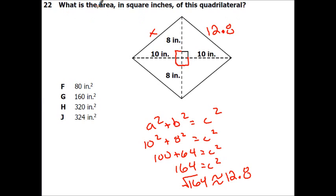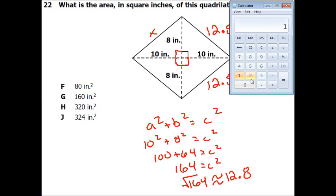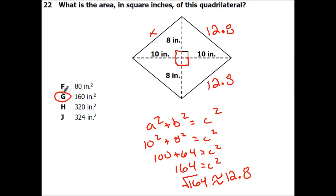This is what is the area in square inches of the quadrilateral. Every side is going to be 12.8. So that means it's a square, or a rhombus, because they all have the same thing. So that's just going to be 12.8 times 12.8. And that's going to equal 163.84. So this one was my closest. So here's what was G on that one.